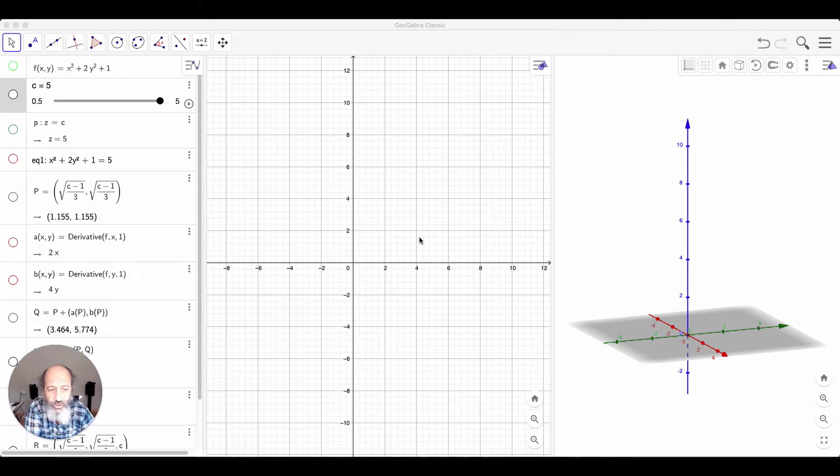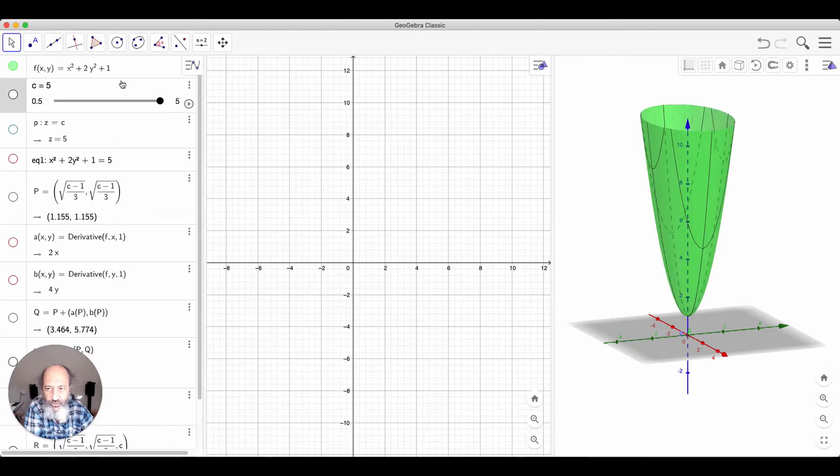Let's see if we can look at this in GeoGebra. For that, I have taken a function f of xy equals to x squared plus 2y squared plus 1. This function, as you can see, has a minimum at the origin.